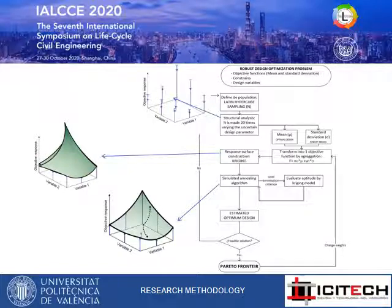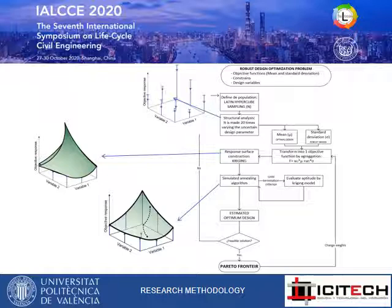In this slide, we can see a general view of the methodology used in this work. Once the objective function, the design variables, and the constraints are defined, an initial population is generated by means of Latin Hypercube Sampling. For each point of the initial sample, the objective function is calculated by varying the initial study parameter, obtaining the mean and the standard deviation. Then, a response surface is generated for the mean and the standard deviation, and finally a set of optimal designs is obtained by varying the weights, thus obtaining a Pareto frontier.